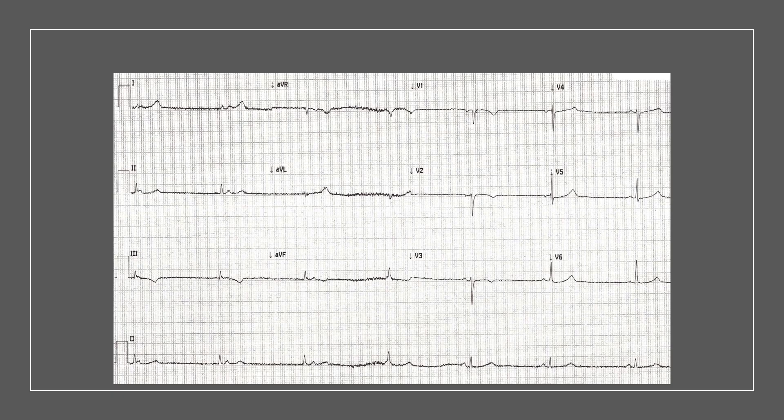Applying this approach to our ECG — starting with the rate, it's around 35 to 37. The rhythm looks quite regular. The QRS complex is narrow. And the axis looks normal. So far, the only abnormality we have is just a slow rate.